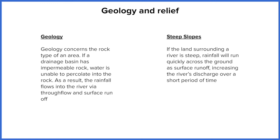Relief refers to the shape of the land. If a slope is quite steep, water is going to travel very quickly down the side of that slope to the bottom of the valley. It's harder for water to infiltrate on a steep slope because it doesn't have time to soak into the ground — it runs off the surface very quickly. We also find most rivers at the base of a valley, which means water gets there even quicker.